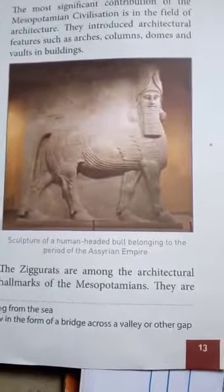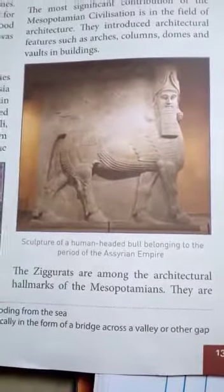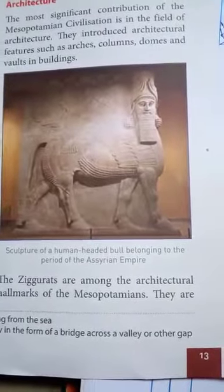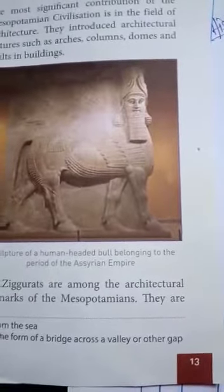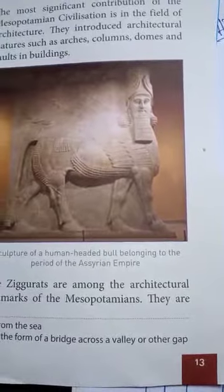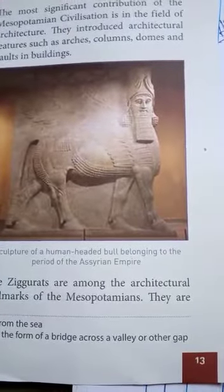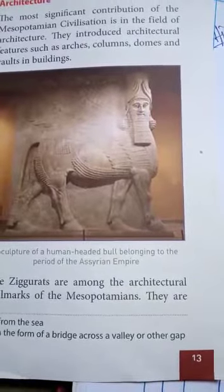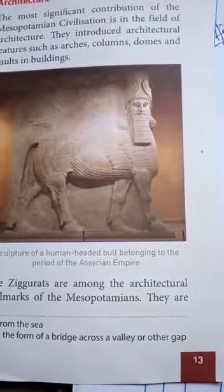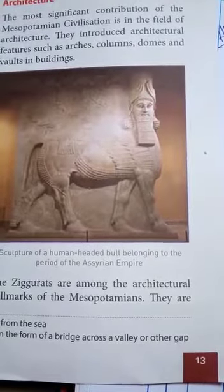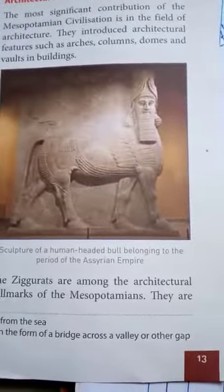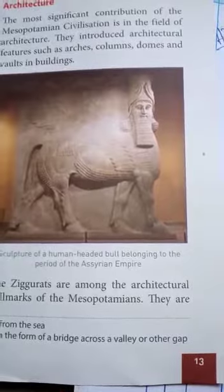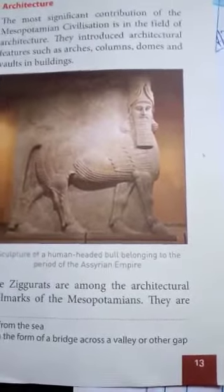An arch is an inverted U-shape construction. A column is a solid upright structure designed usually to support a large structure above it. When you want to make one larger structure which needs to be supported, that solid upright structure is called a column.